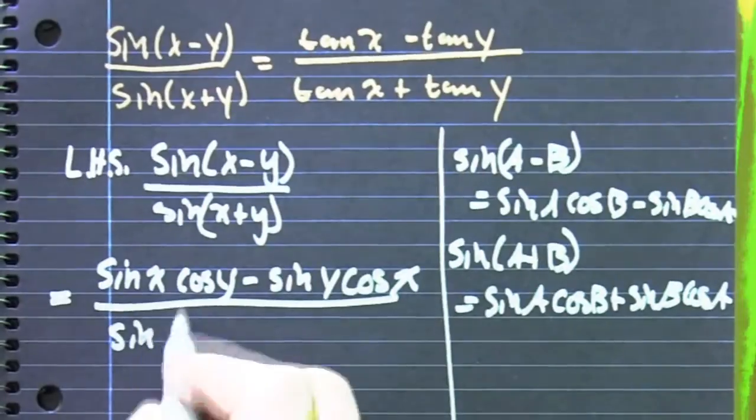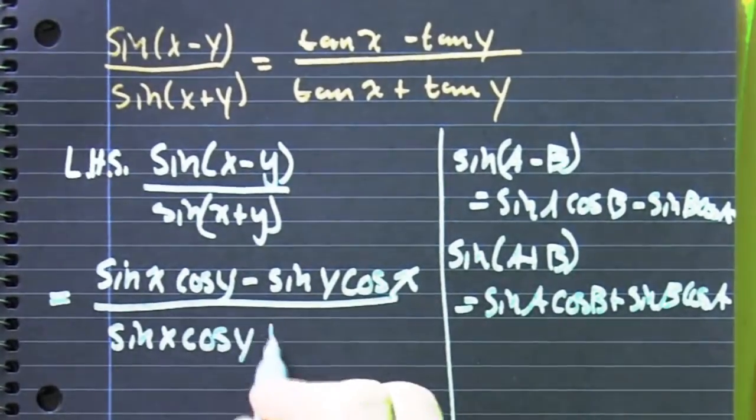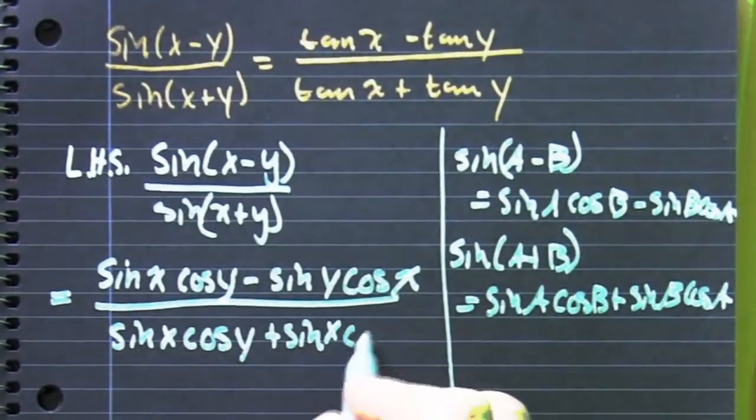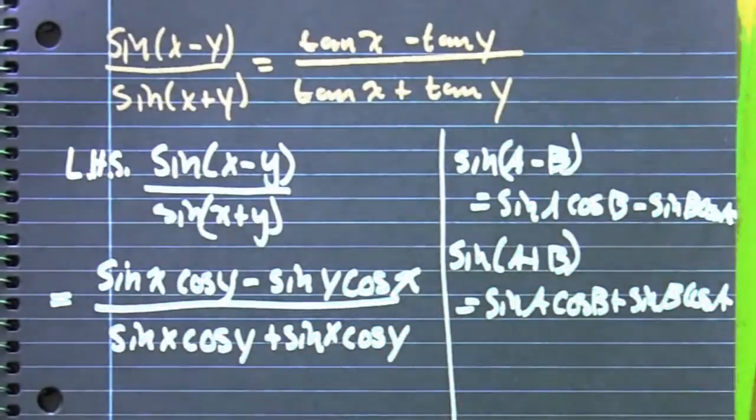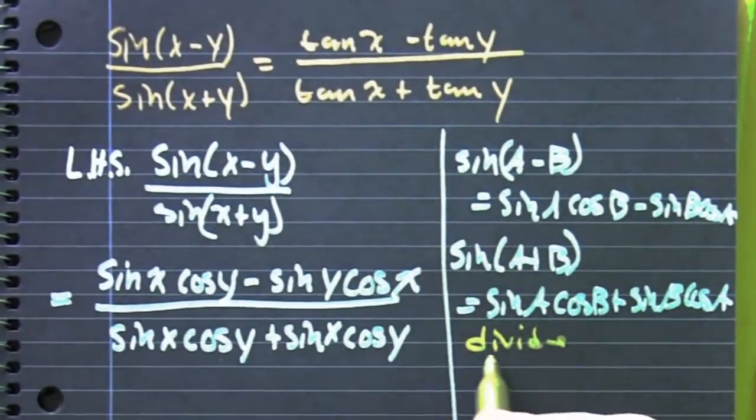Divided by that sum. The sine of x cosine y plus sine of y cosine x. When you redo this proof, make sure you catch that part. What are you going to do now?